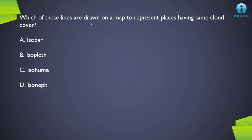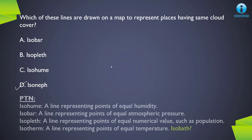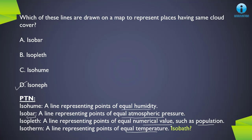Next question: which lines are drawn on a map to represent places having the same cloud cover? Those lines are called Isonef. Other important map lines to know: Isohume represents points of equal humidity; Isobars represent points of equal atmospheric pressure; Isopleth represents points of equal numerical value, which can include population; and Isotherm is a line representing points of equal temperature. You can tell me in the comment section what Iso-bath lines represent.